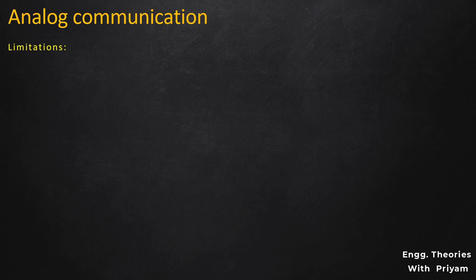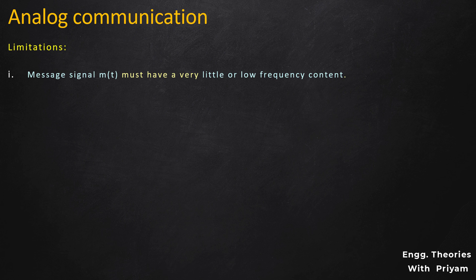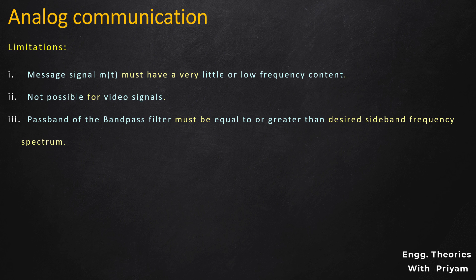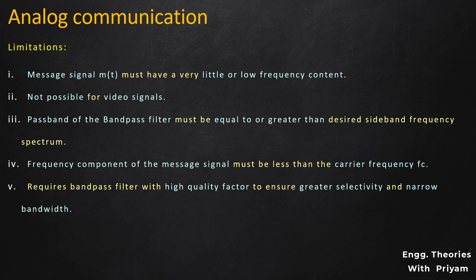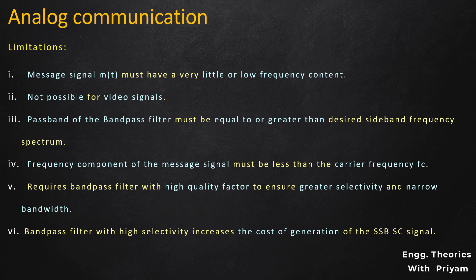Now let us see the limitations of SSBSC modulation using the filter method. The message signal m(t) must have very little or low frequency content. This modulation process is not possible for video signals, as there is no gap between the upper and lower sidebands, making separation impossible. The passband of the bandpass filter must be equal to or greater than the desired sideband frequency spectrum. The frequency component of the message signal must be less than the carrier frequency fc. A high quality factor bandpass filter is required to ensure greater selectivity and narrow bandwidth, which increases cost.